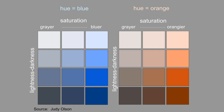Saturation is sort of the purity of the color. As you can see, as the saturation increases, the orange is a purer orange and the blue is a purer blue. As the saturation decreases, the colors get grayer. And lightness — they're whiter when they're lighter and blacker when they're darker.